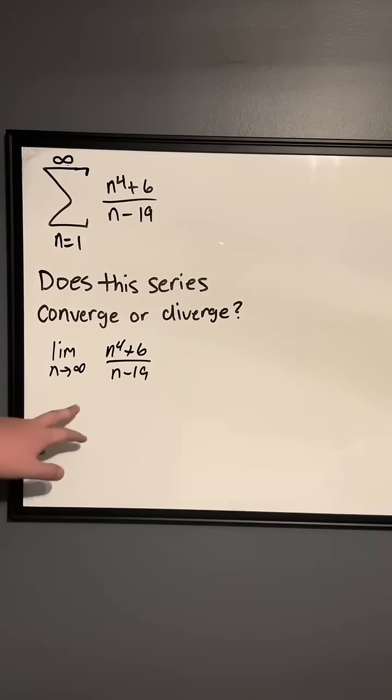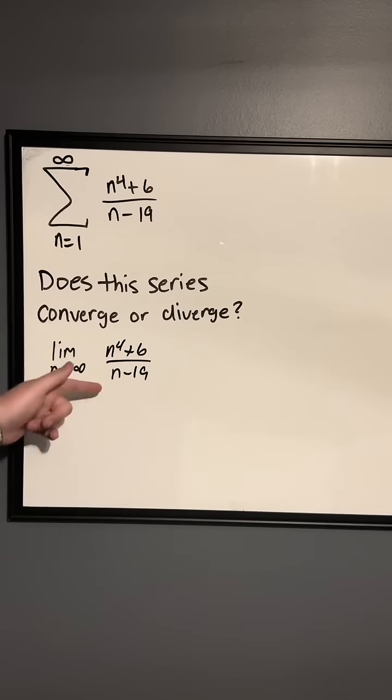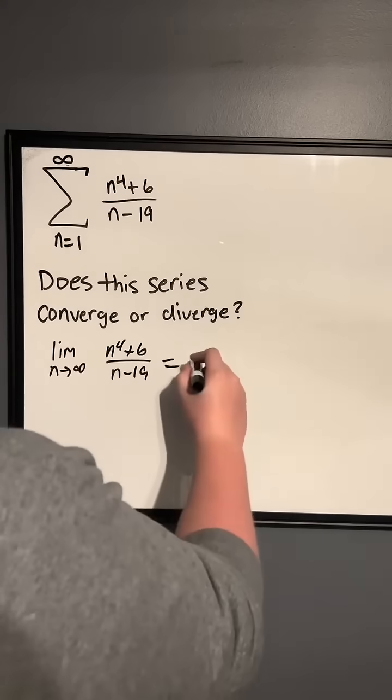Now since this goes to infinity, we can use the degree rule. So the degree rule says that if the degree of the top is greater than the degree of the bottom, then the limit is going to go to infinity.